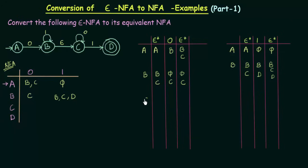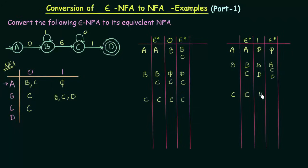Now state C on input 0: the Epsilon closure of C is only C. C on input 0 goes to C itself, and the Epsilon closure of C is C. So C on input 0 goes only to C. For C on input 1: the Epsilon closure of C is C, C on input 1 goes to D, and D's Epsilon closure is only D. So C on input 1 goes to state D.